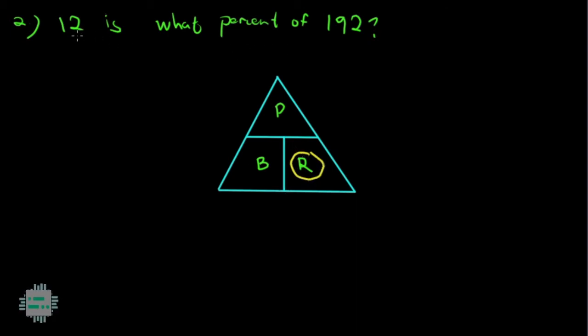This means that this 12 and 192 are either base or percentage. We know that base is always larger compared to percentage. So this means that 192 is our base, while 12 is our percentage. So we're looking for what number with the percent symbol is 12 from 192.